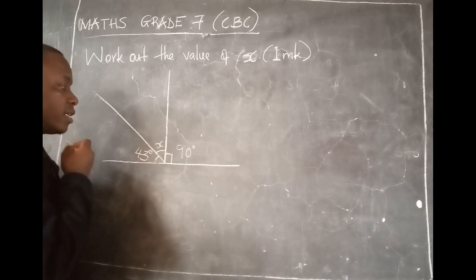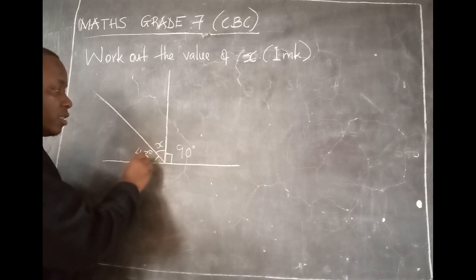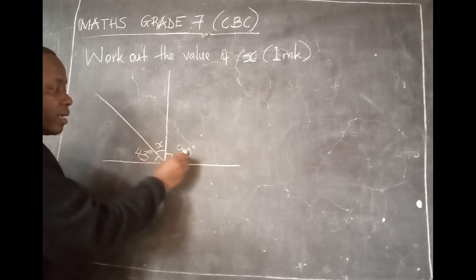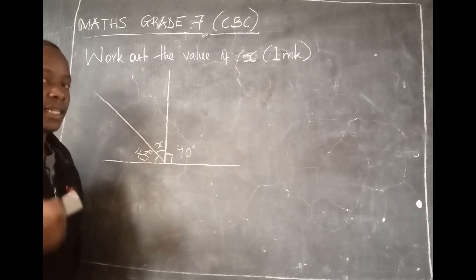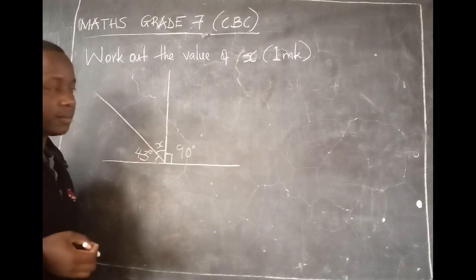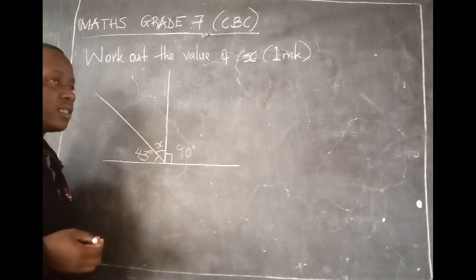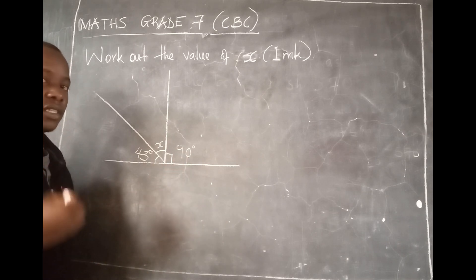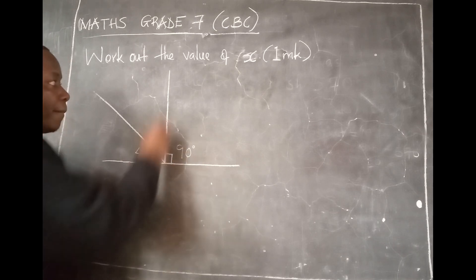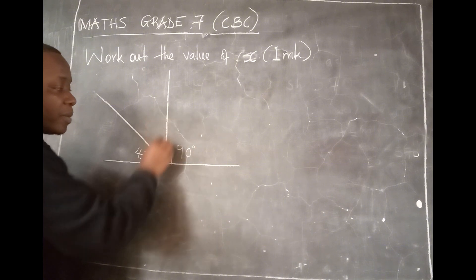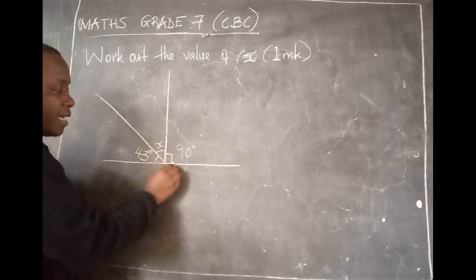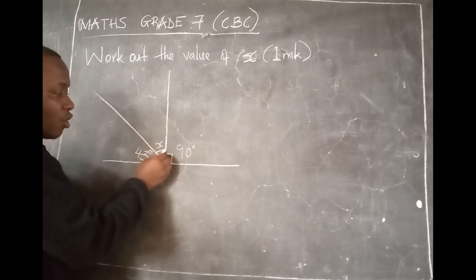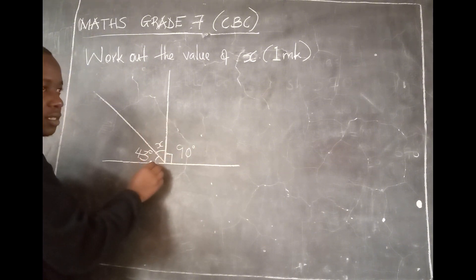Or, you can say 43 plus x plus 90 adds up to 180. Now, in this case, I'll use the shortest formula. Because this is a perpendicular bisector, this is 90, and even all of this is 90.